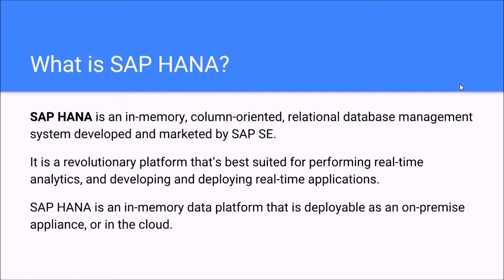What is SAP HANA? I found three different definitions on the internet about what SAP HANA is. Two definitions say that SAP HANA is a platform, and one says that it is a relational database management system. SAP HANA is an in-memory column-oriented relational database management system developed and marketed by SAP SE. A second definition says that it is a revolutionary platform best suited for performing real-time analytics and developing and deploying real-time applications.